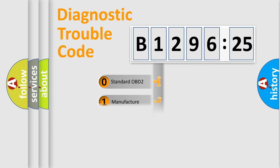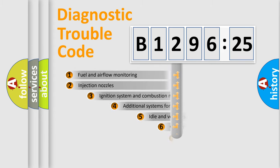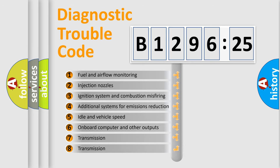If the second character is expressed as zero, it is a standardized error. In the case of numbers 1, 2, or 3, it is a manufacturer-specific expression of the car-specific error.